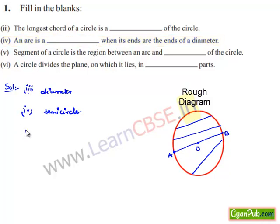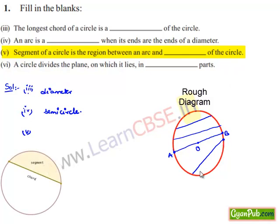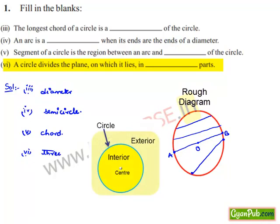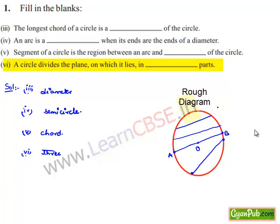Moving on to the fifth bit: a segment of the circle is the region between an arc and the chord of the circle, by definition. Moving on to the sixth bit: a circle divides the plane on which it lies into three parts — the interior of the circle, the exterior of the circle, and the points lying on the circle itself. Therefore, a circle divides the plane into three parts.